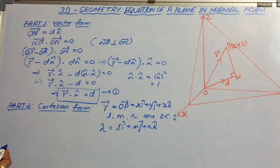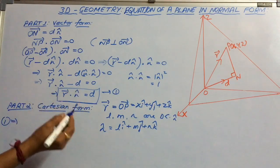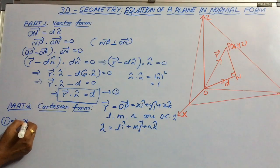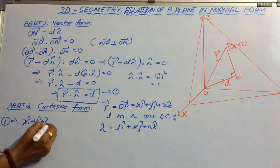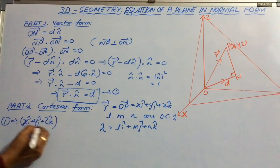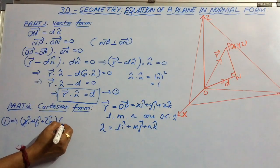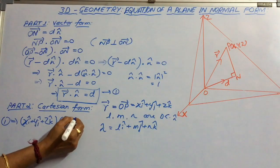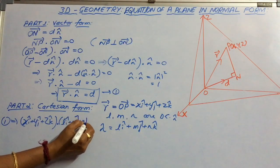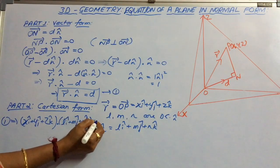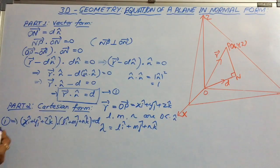If we substitute these values in equation 1, we will get equation 1 implies r dot n cap. That means x i cap plus y j cap plus z k cap dot product with n cap, that is l i cap, m j cap plus n k cap equal to d.